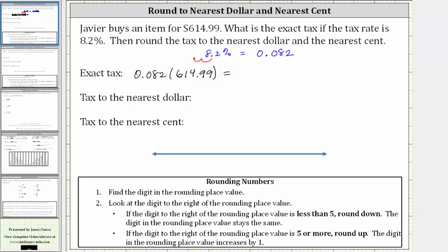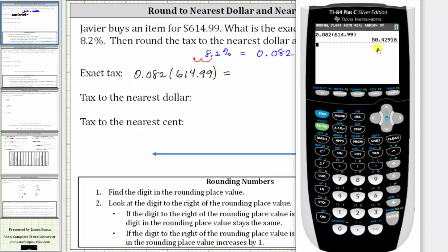Going to the calculator, the exact tax is $50.42918.